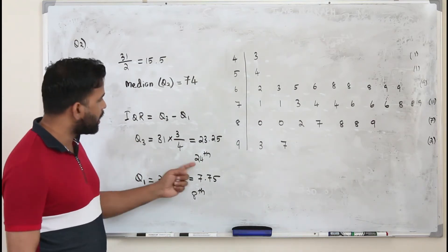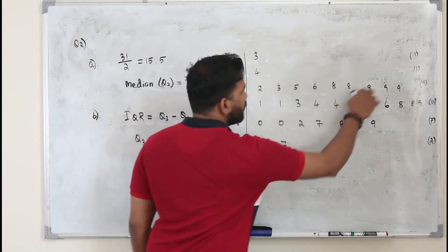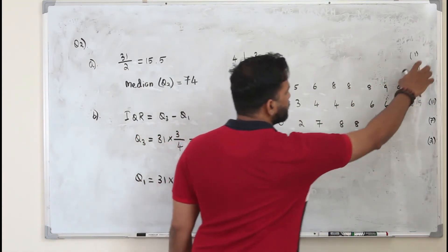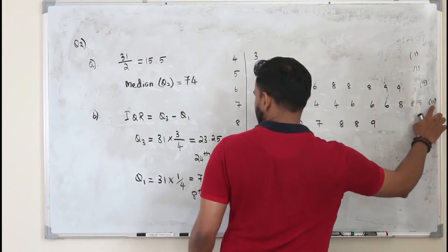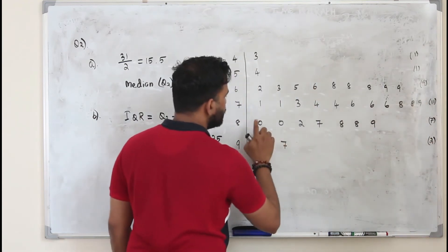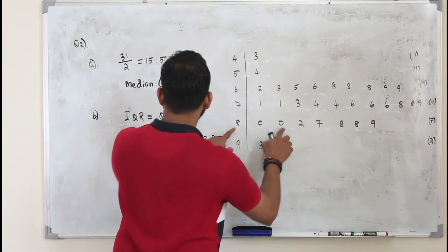Now Q3 is the 24th entry. You don't need to count from here. You just count the total entry here. 2, 11 plus 11, 22. We have 24th entry. 22, 23, 24. 24 is 80.